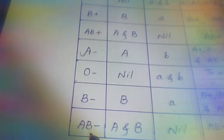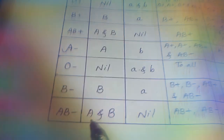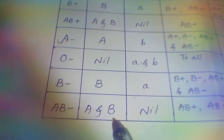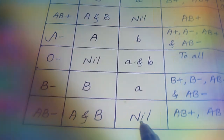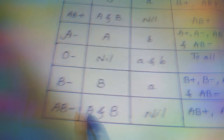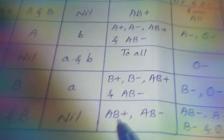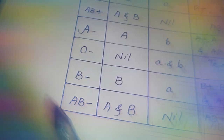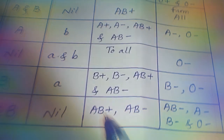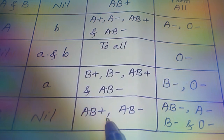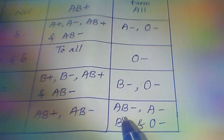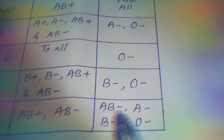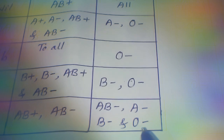The last blood group is AB negative. It shows the presence of both antigen A and antigen B on the RBC surface, with no antibodies in the blood serum. The negative sign shows the absence of the Rh factor, antigen D. An AB negative person can donate blood to AB positive and AB negative persons, and can receive blood from AB negative, A negative, B negative, and O negative persons.